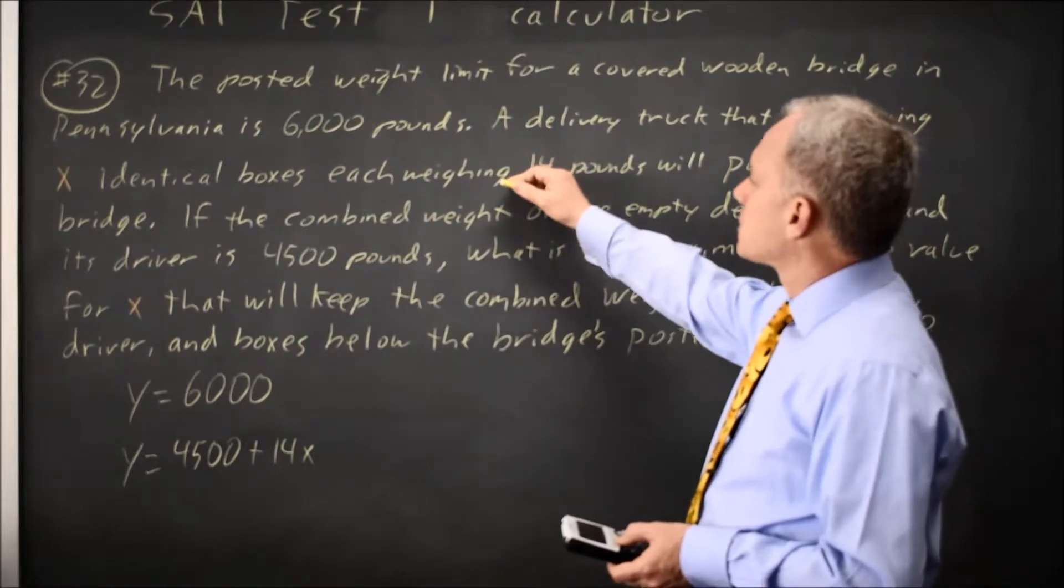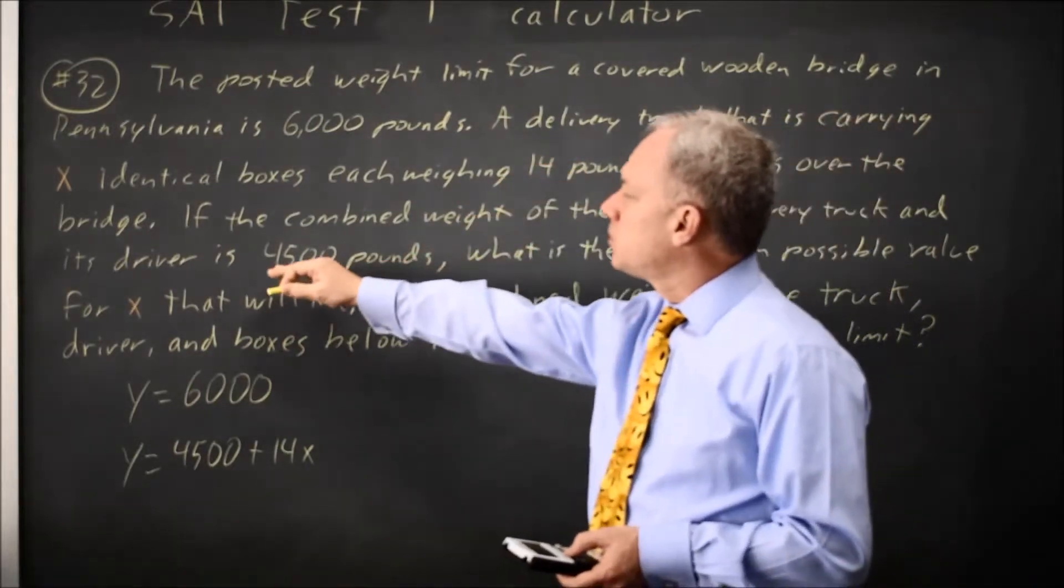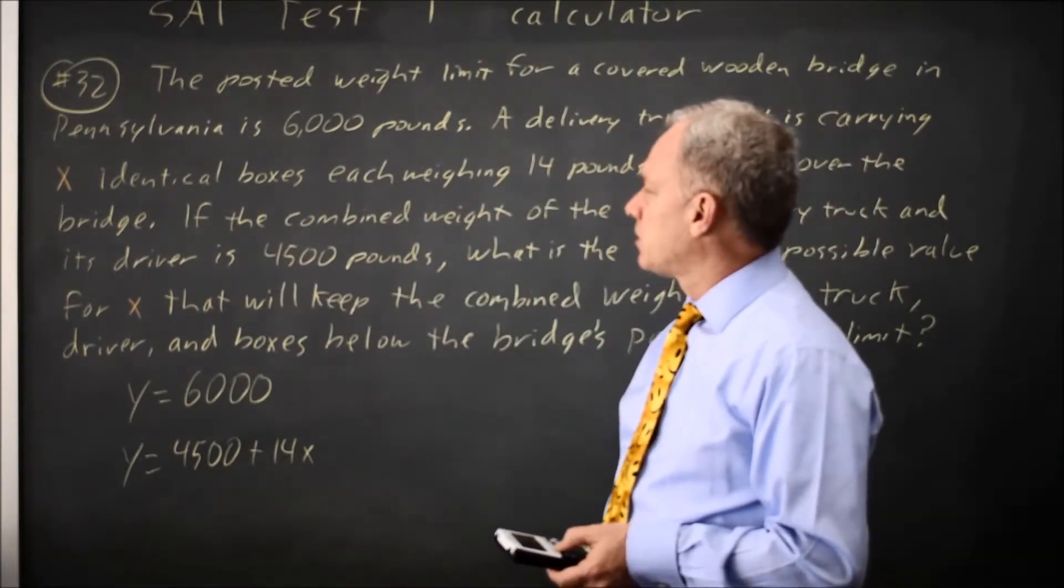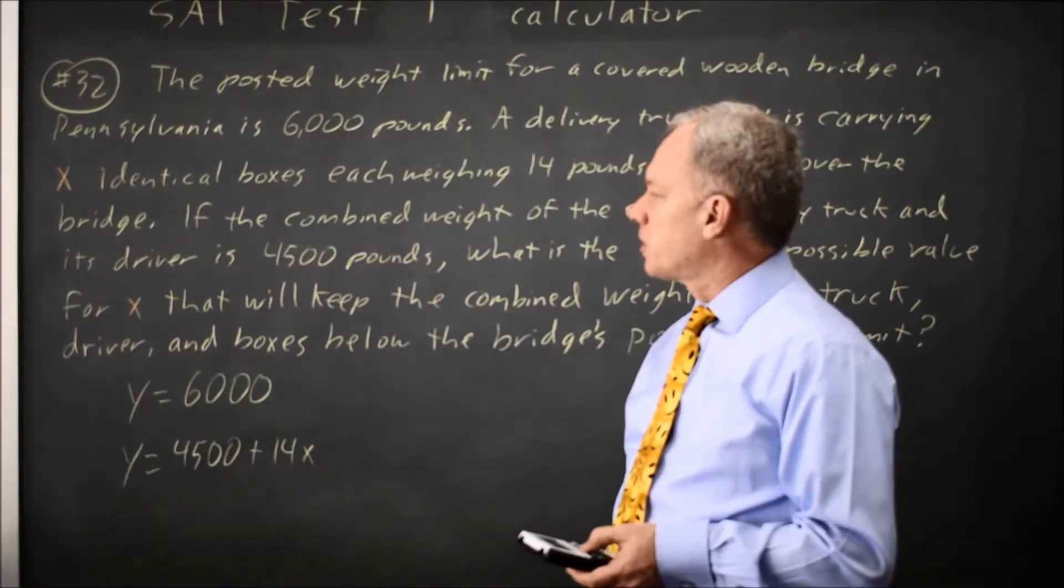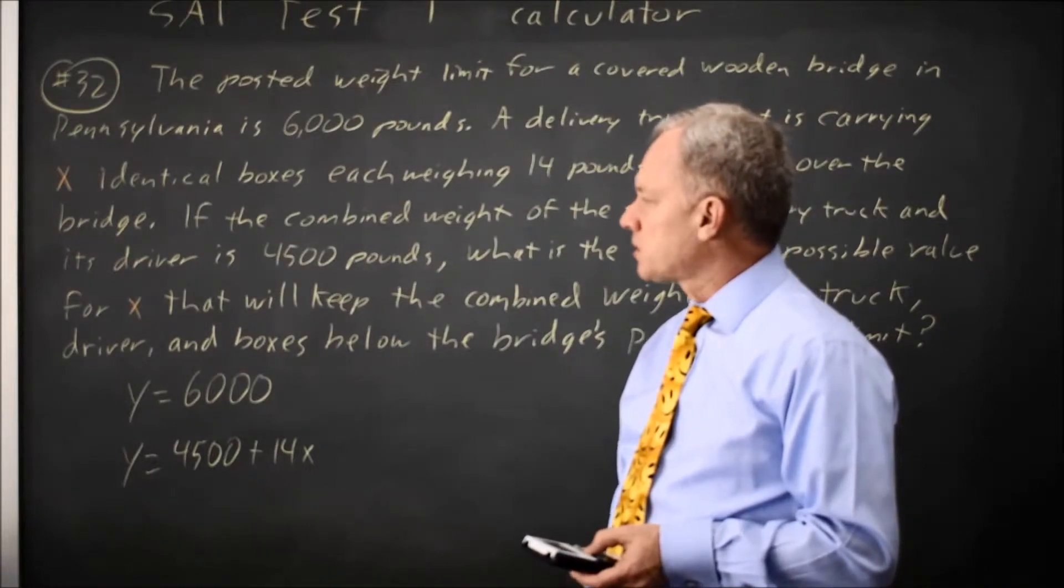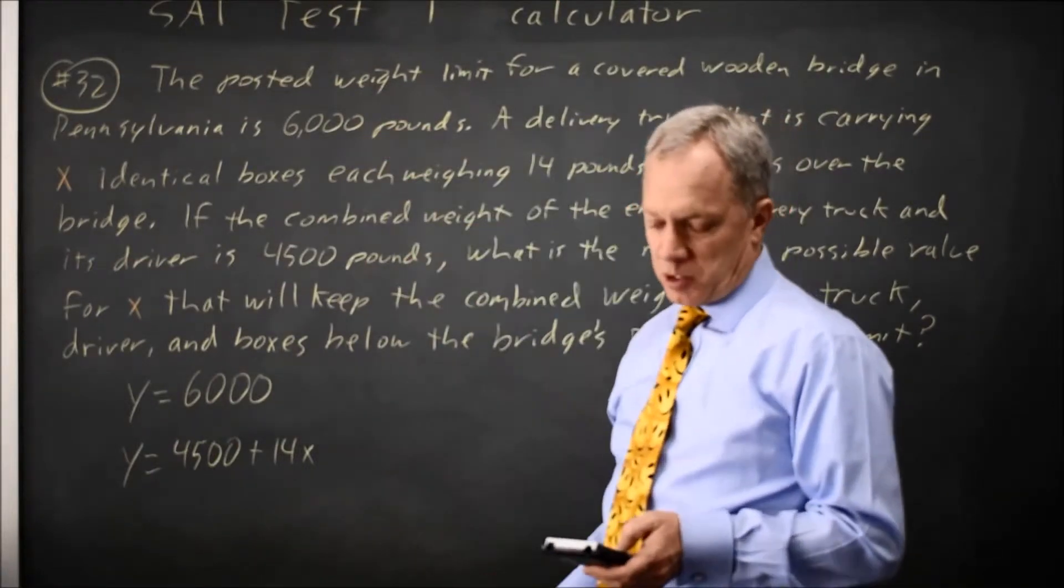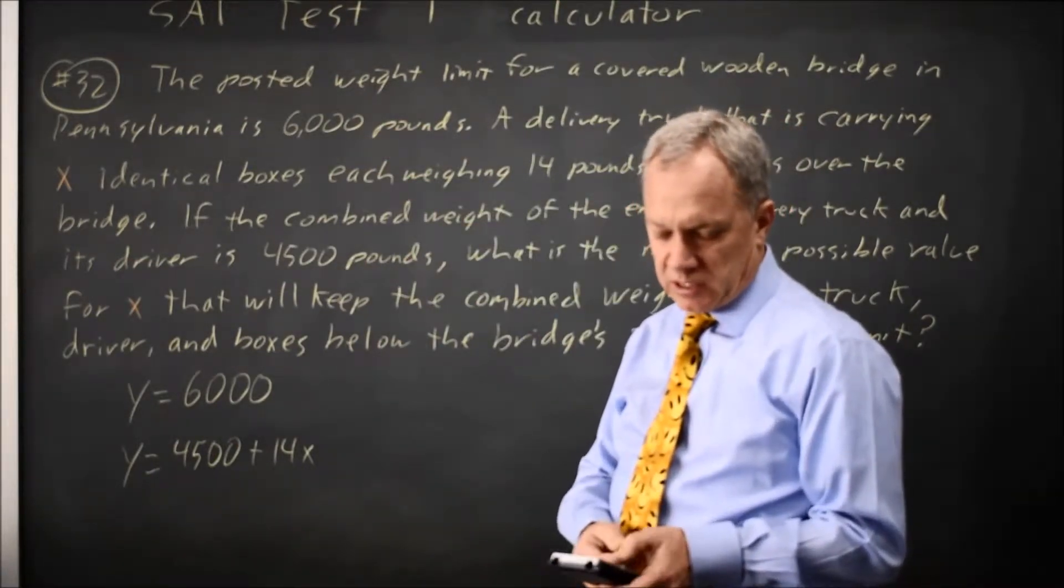For a window, I know if I have 100 boxes, that's 1,400 pounds, which is almost enough to take us over the weight limit, so I'm going to put my X max as 200, so I'm sure it will be in my window, and my Y max, since I need to see 6,000, I'm going to put 8,000 for my Y max, hit graph.